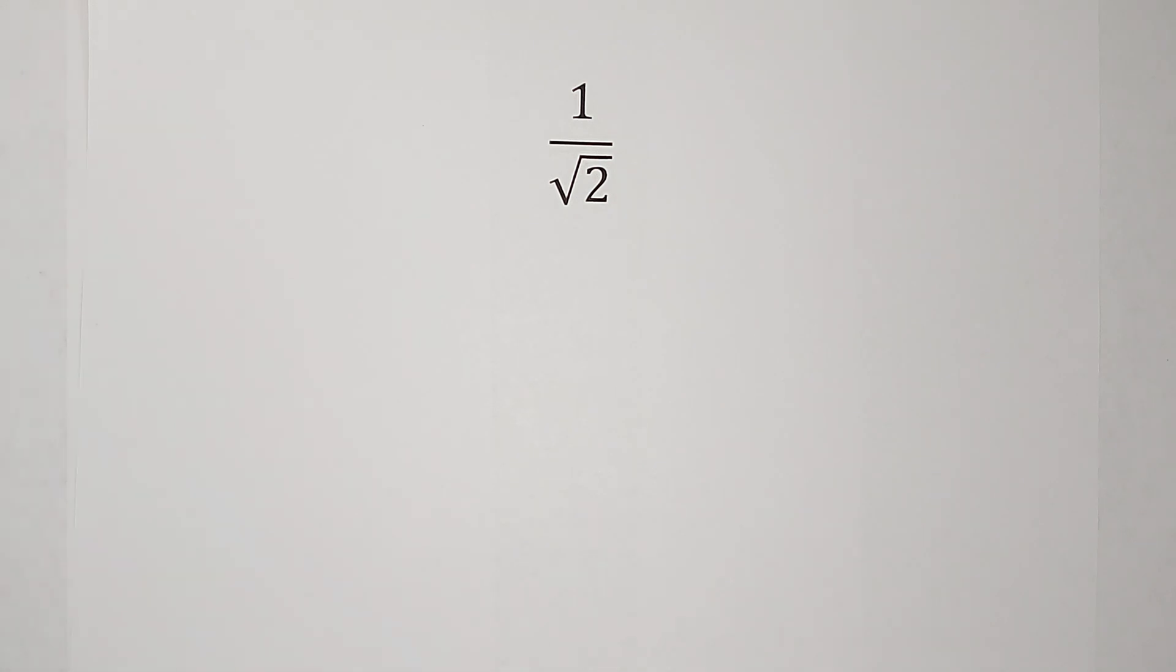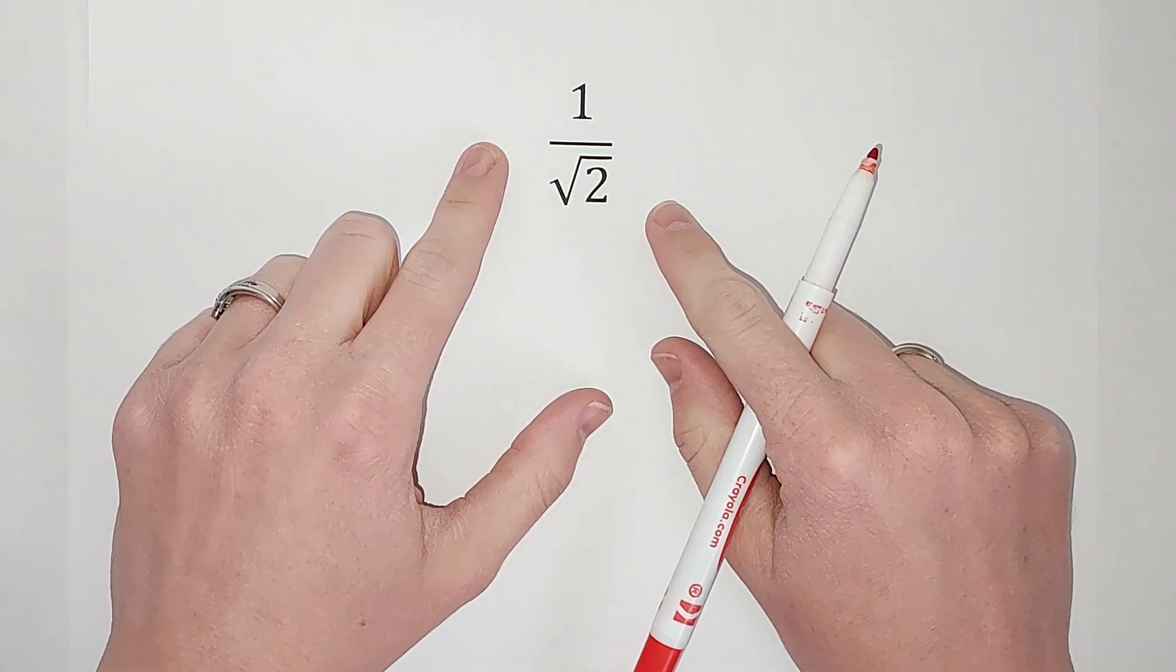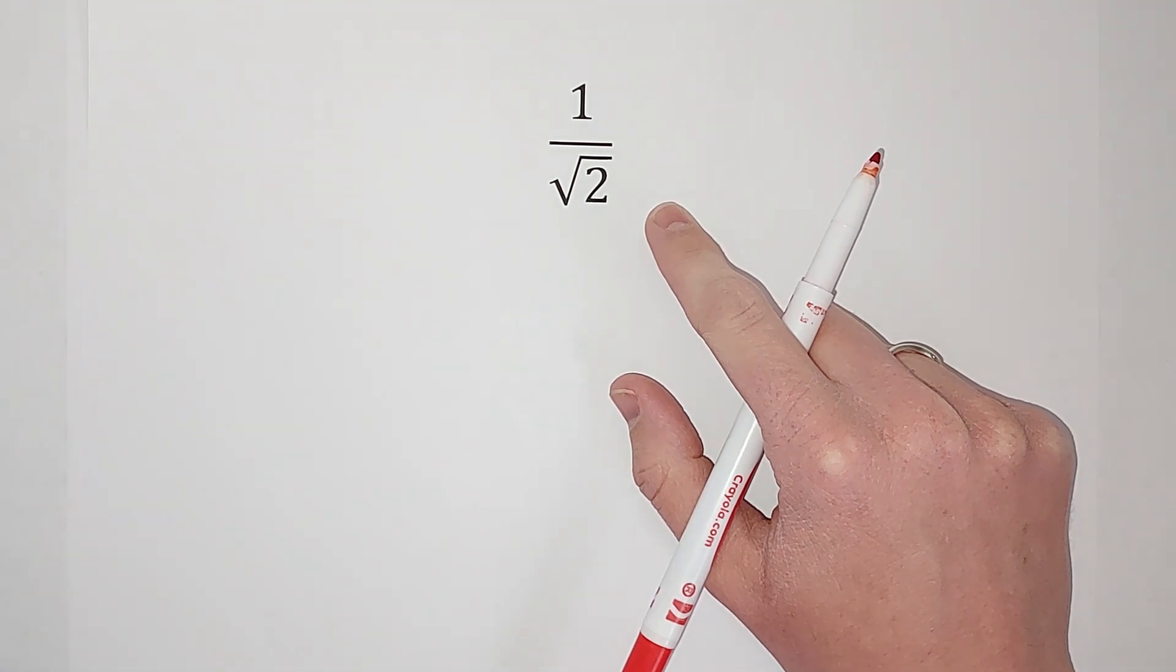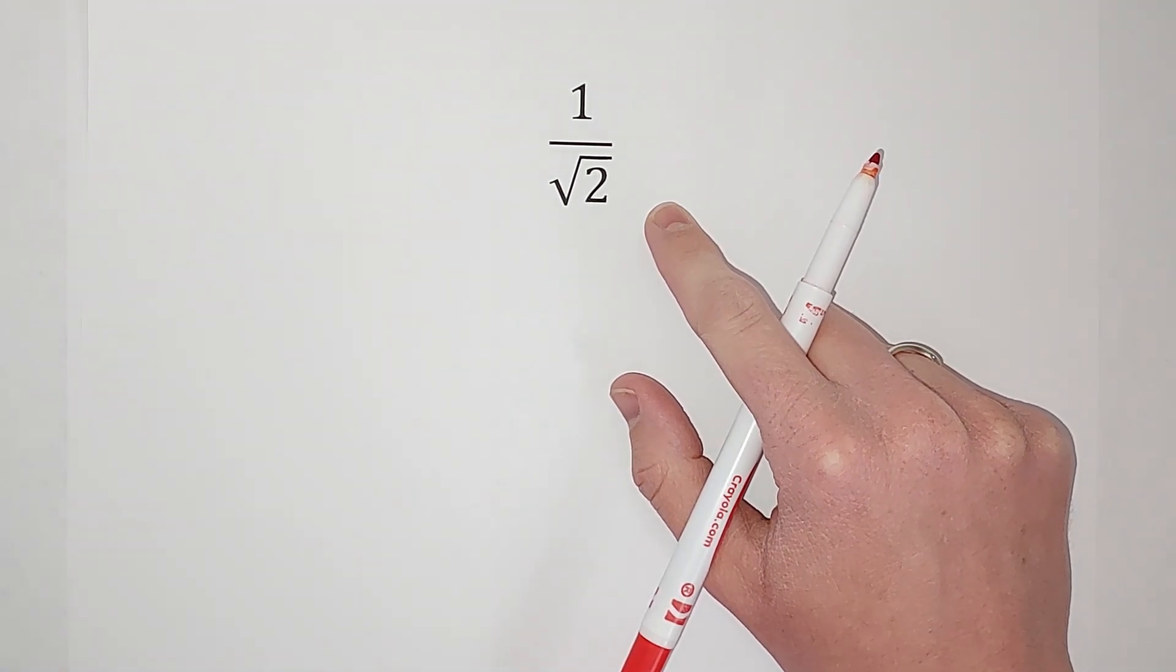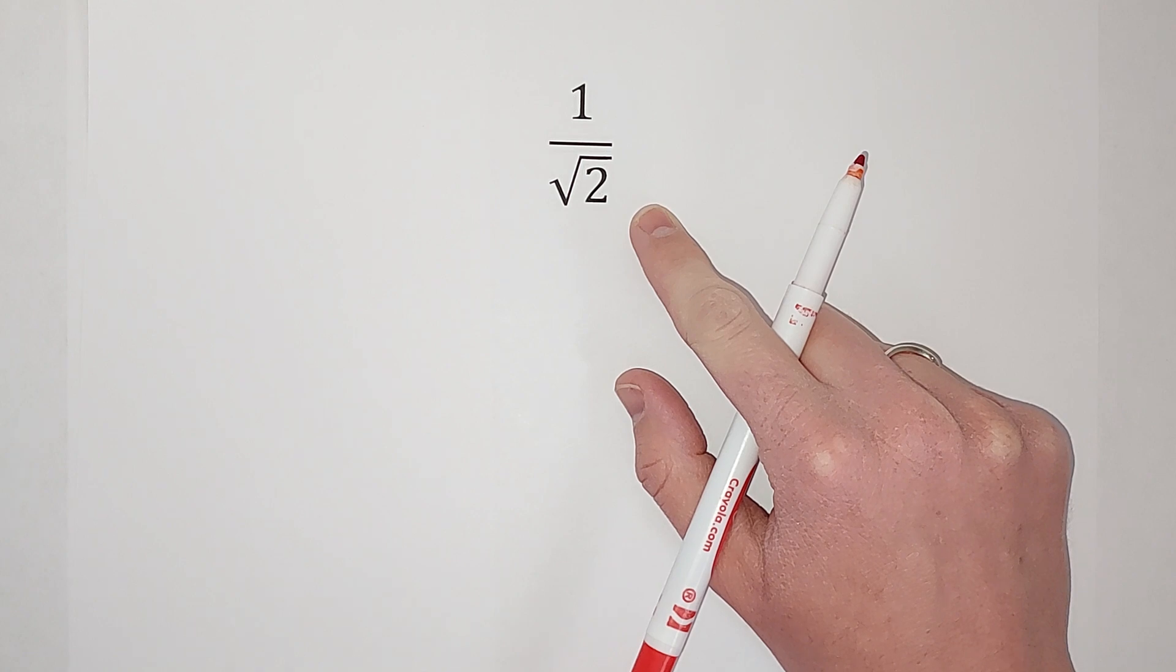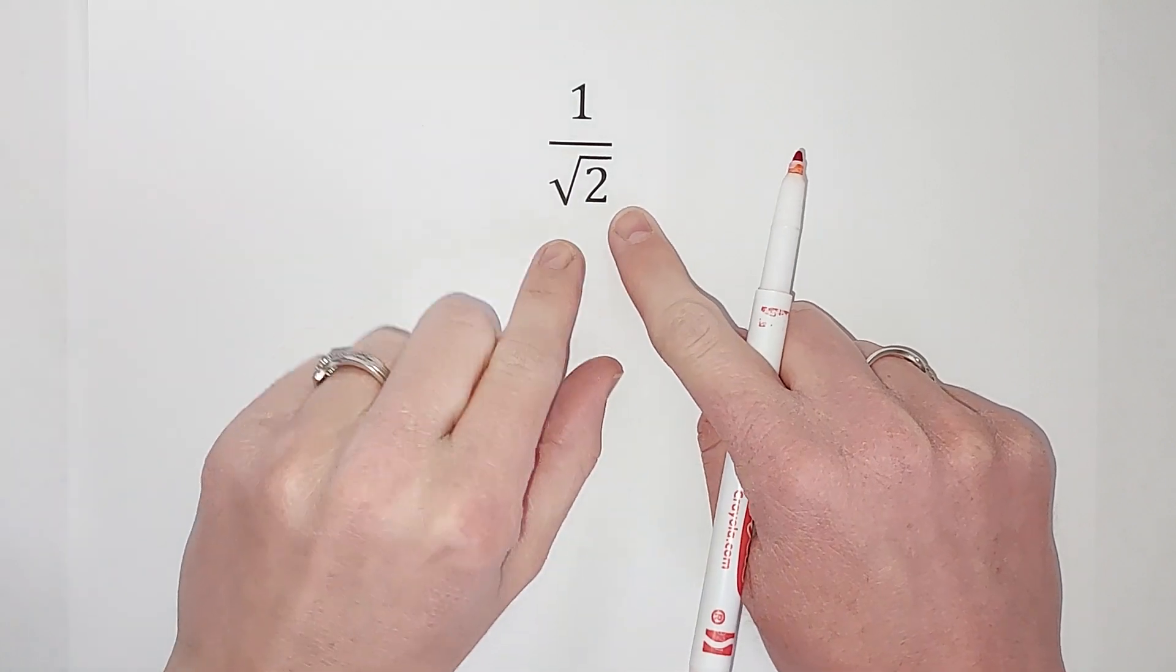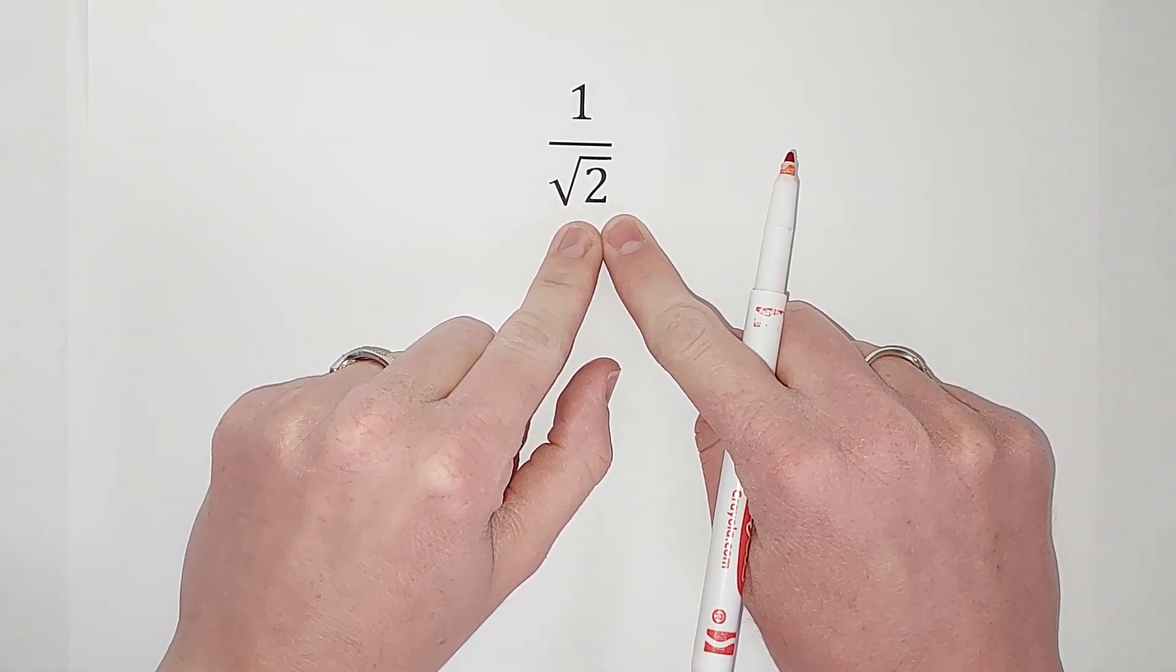So if you ever get an answer that looks something like this, where there is a square root or some sort of radical in your denominator, if you leave it like this you will probably get points docked. But it is a pretty easy fix, actually. All we have to do is look at what the square root in the denominator is.